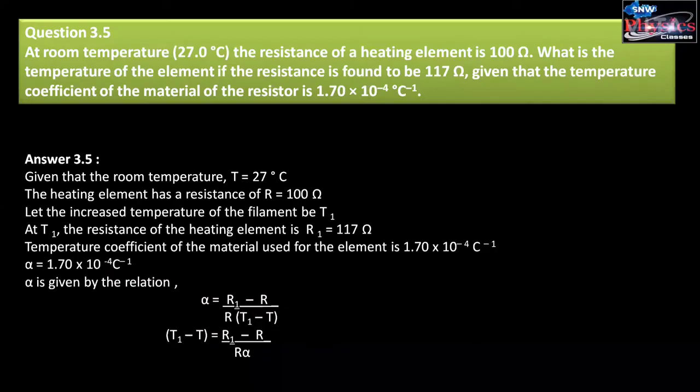Question number 3.5 says that at room temperature 27 degrees Celsius, the resistance of the heating element is 100 Ohm. There is a heating element whose resistance is 100 Ohm.